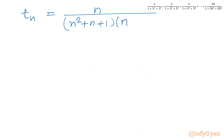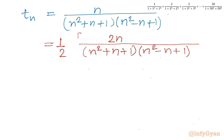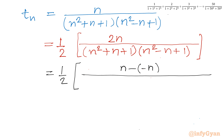Rewriting: Tn = n / [(n²+n+1)(n²-n+1)]. Now I will use an algebraic manipulation step — divide and multiply by 2 — so the numerator becomes 2n and the denominator remains (n²+n+1)(n²-n+1). We can write 2n as (n²+n+1) - (n²-n+1), noting that n minus (-n) gives 2n.